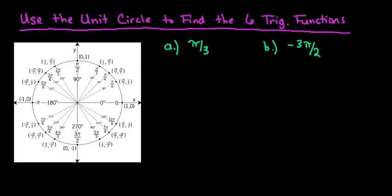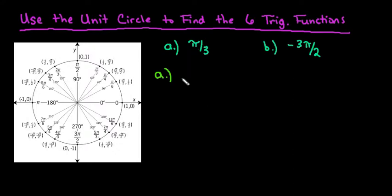For this video, I want to show you how to use the unit circle to find the six trig functions for a couple of given angles. I have two different angles: pi over 3 and negative 3 pi over 2, and for both of them I gave you the radian measurement which corresponds to the arc length. We're going to find the sine, cosine, tangent, cosecant, secant, and cotangent for each of the angles. I do have another video that shows all of the rules and where they come from, and also a video that shows how to set up the unit circle, so if you're confused on those make sure you check those out.